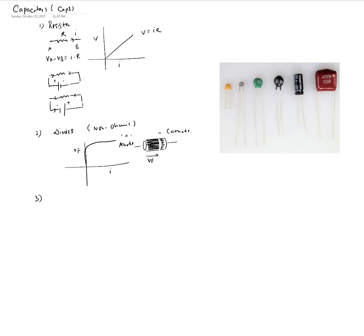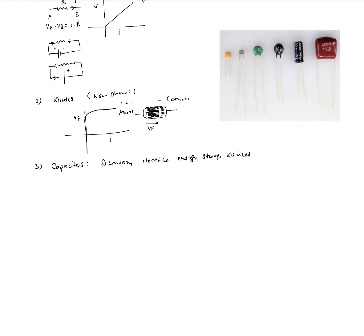Capacitors are called secondary electrical energy storage devices. The reason they are called secondary, as opposed to primary electrical energy storage devices like batteries, is because you can charge capacitors and they can supply a current temporarily when they are discharged.